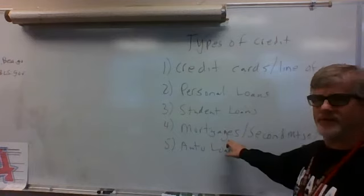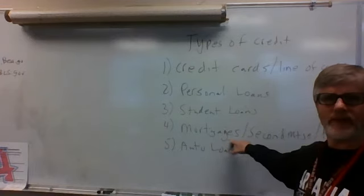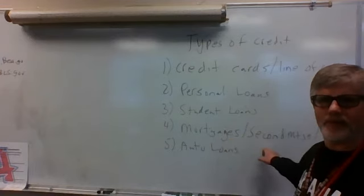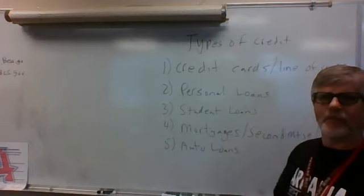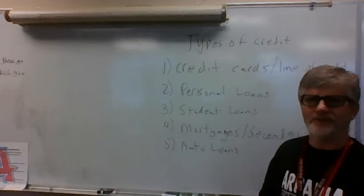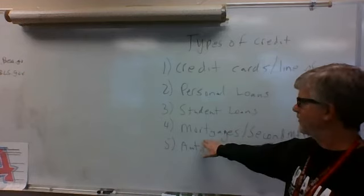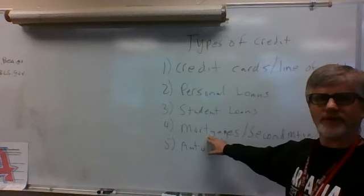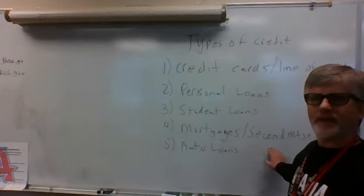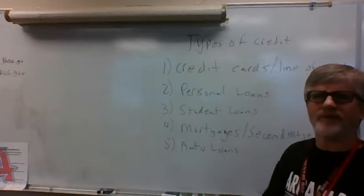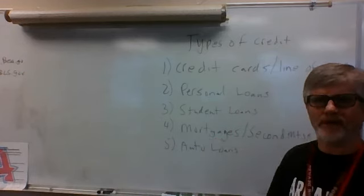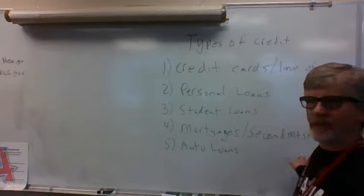To summarize mortgages: a first mortgage is the cheapest, tied to the house, and typically 30 years in term. A second mortgage is a little more expensive, also tied to the house, and is 15 to 20 years in term. Then you have your home equity line of credit.